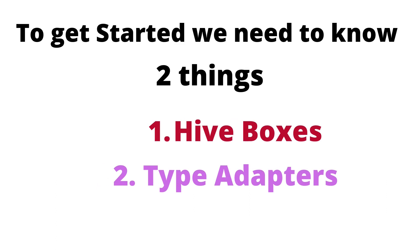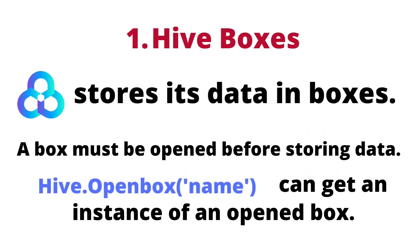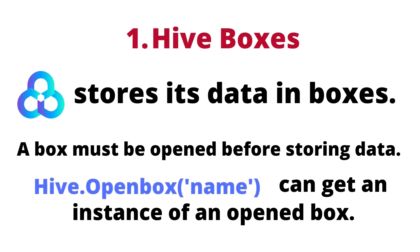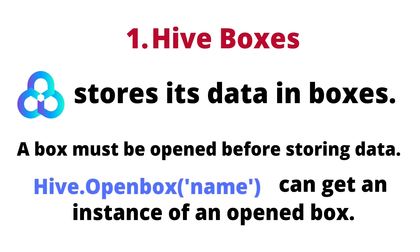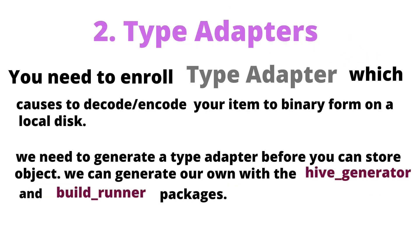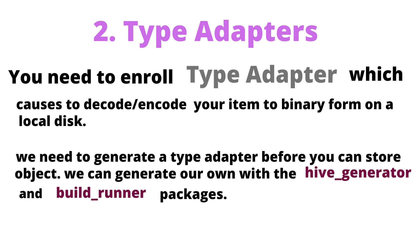Number three: how can we get started with Hive? To get started, we need to know two things: first, Hive boxes, and second, type adapters. Hive stores its data in boxes. A box must be opened before storing data. Hive dot open box can get an instance of an opened box. You need to register a type adapter, which encodes or decodes your item to binary form on local disk. We need to generate a type adapter before you can store objects — we can generate our own with the hive_generator and build_runner packages.